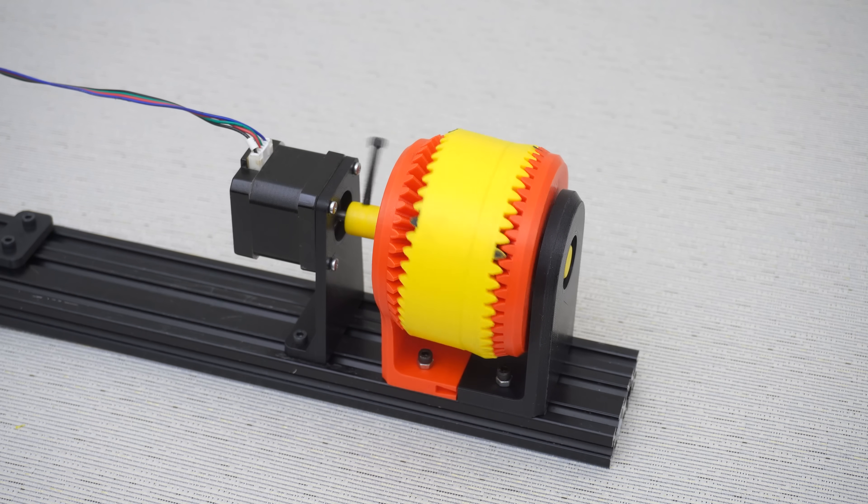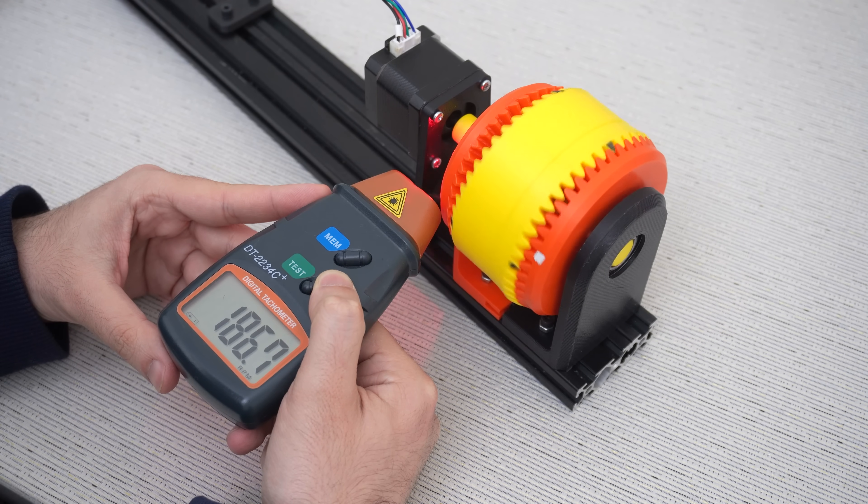And you see, while the input shaft is rotating around 180 RPM, the output is indeed extremely slow. Just four revolutions.